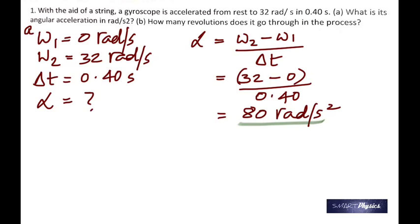And then in the B part, it says how many revolutions does it go through in the process? So you're looking for the number of rotations it makes for it to go from 0 to 32 radians per second.